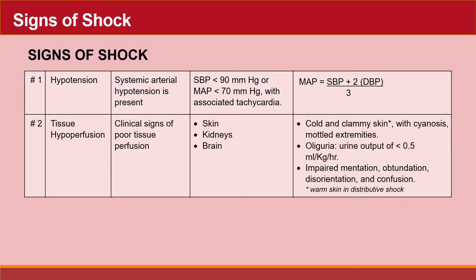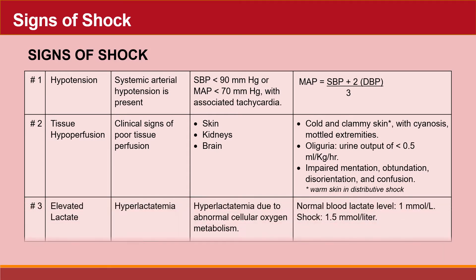The second sign of shock is tissue hypoperfusion. The patient will exhibit clinical signs of poor tissue perfusion to the skin, kidneys, and brain. The skin will be cold and clammy with cyanosis and mottled extremities. Oliguria with a urine output of less than 0.5 mL per kg per hour will occur, and the patient will have impaired mentation, obtundation, disorientation, and confusion. The third sign is elevated lactate — hyperlactatemia is due to abnormal cellular oxygen metabolism, with blood lactate rising above 1.5 mmol/L.